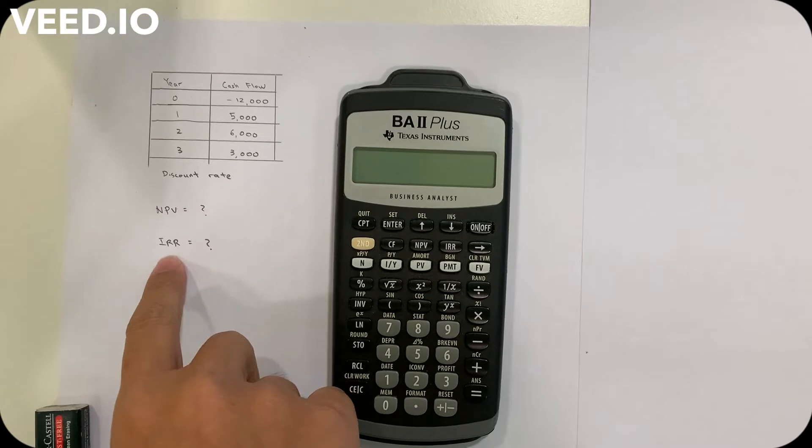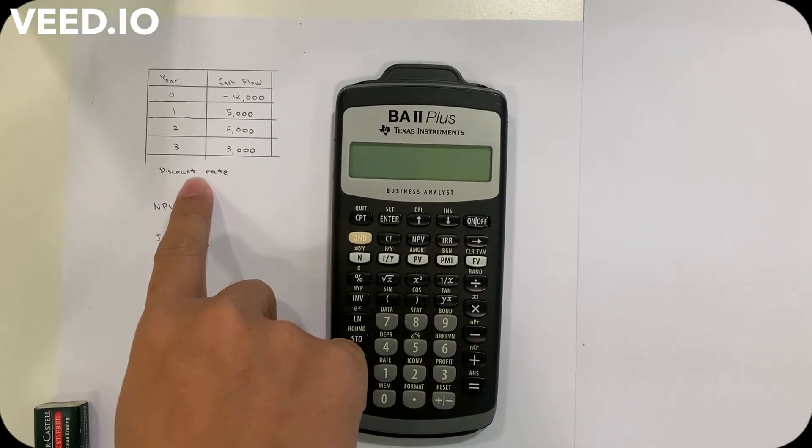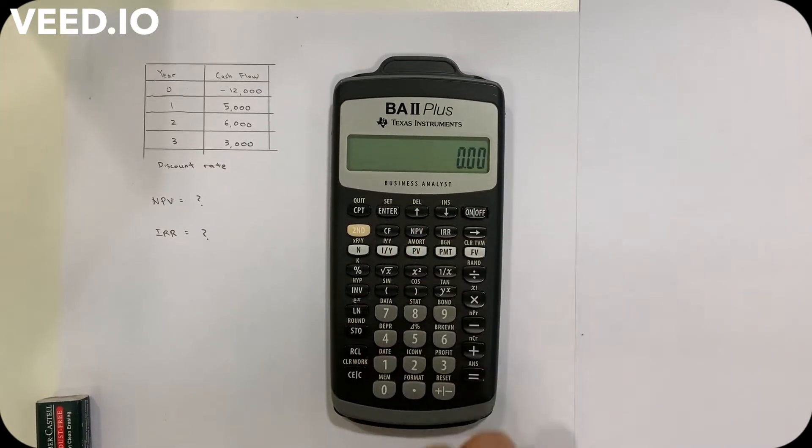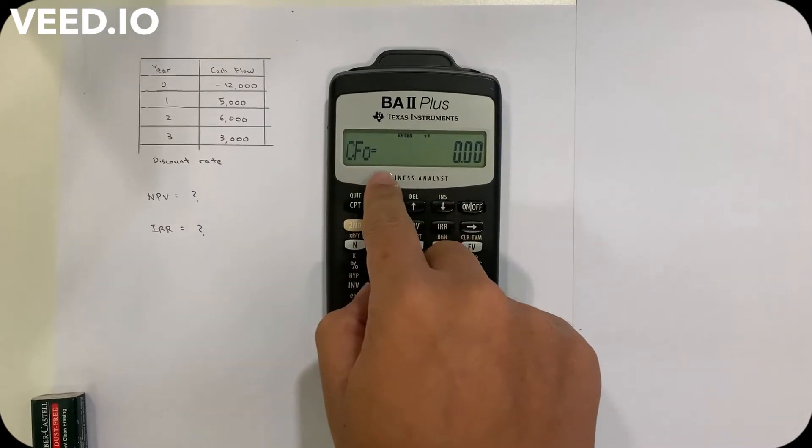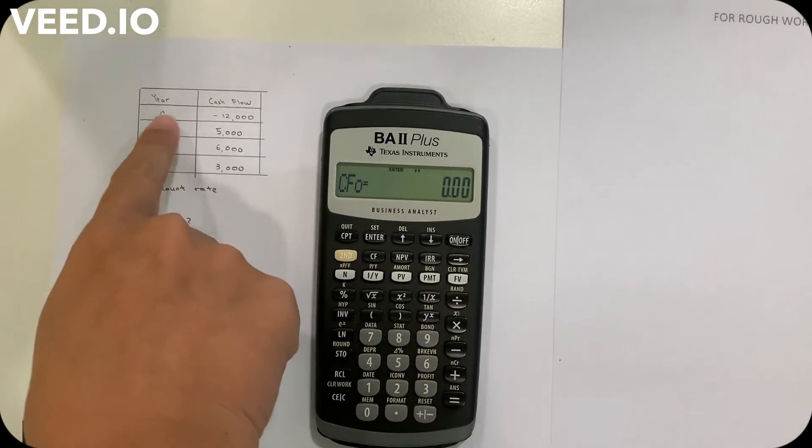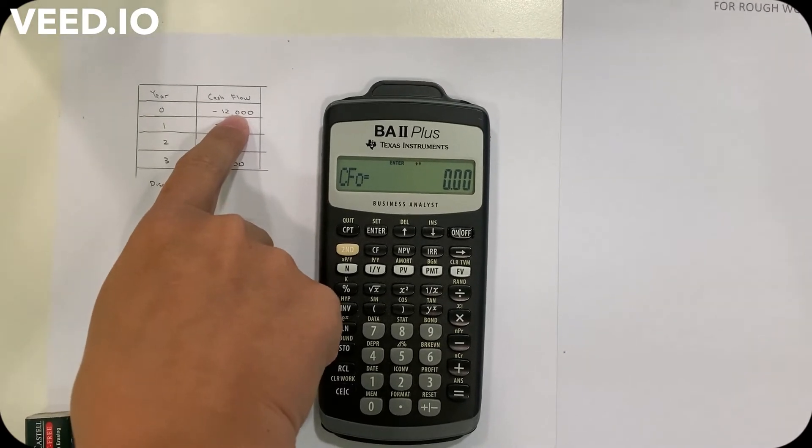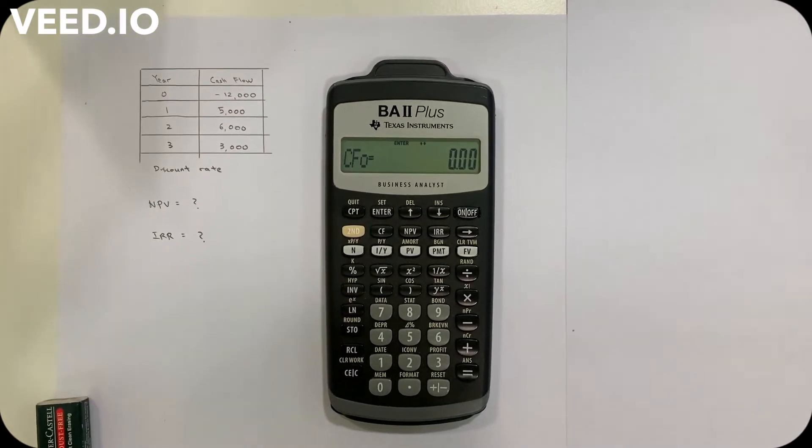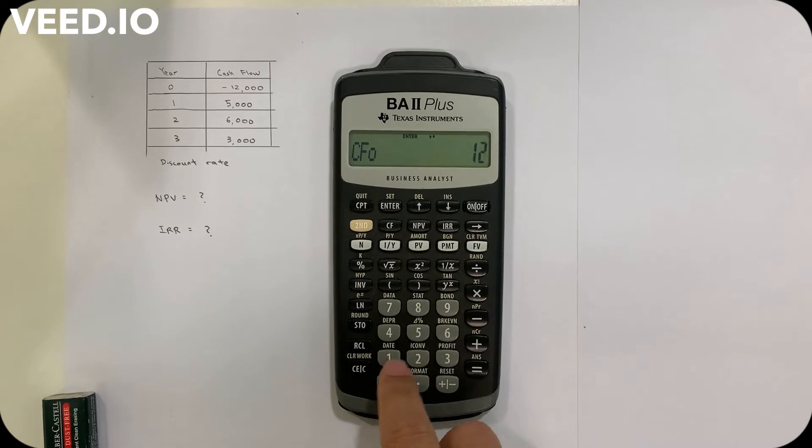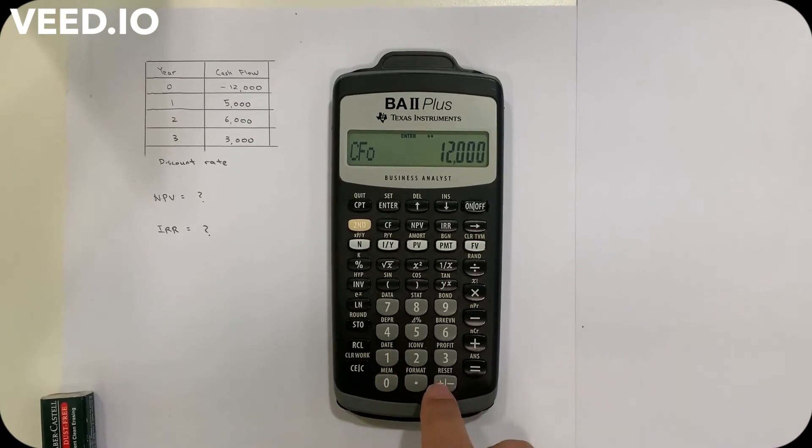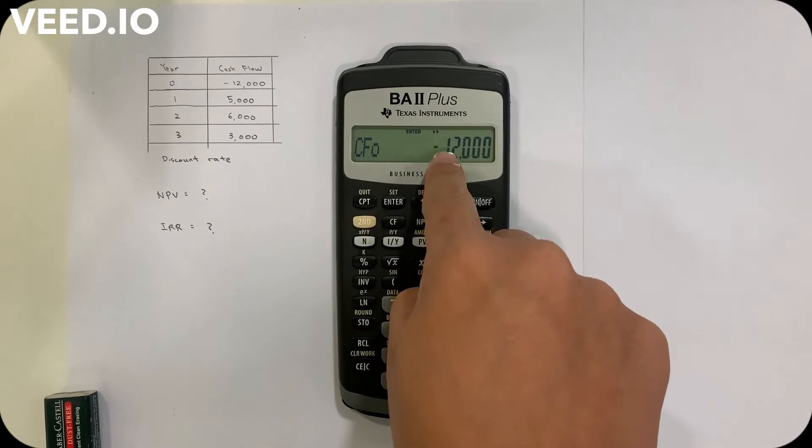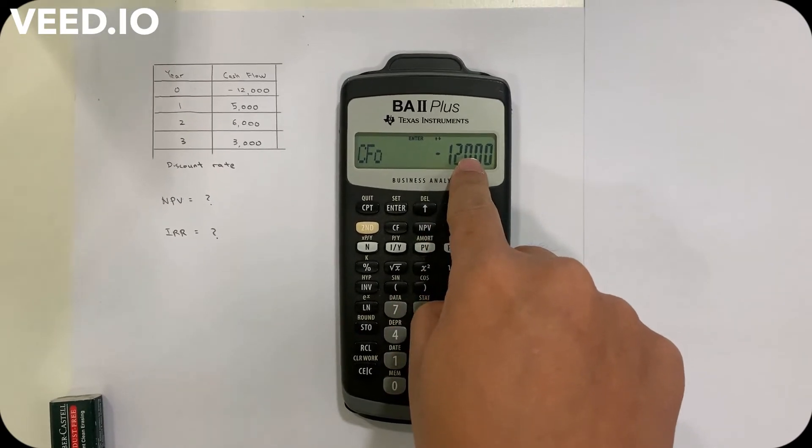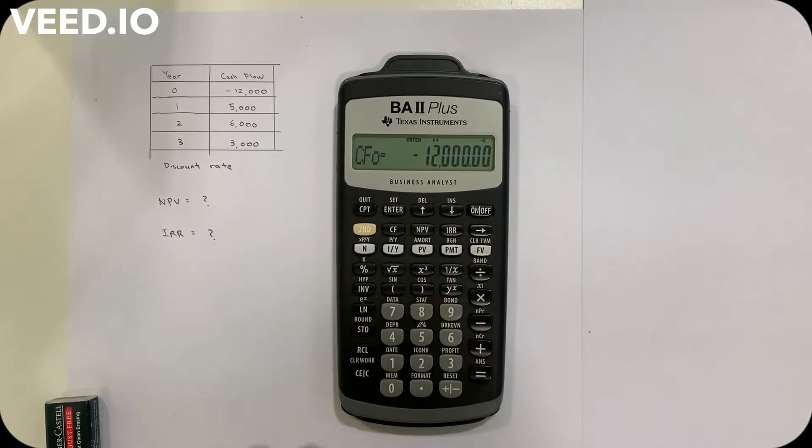I have to start with the CF button. This will show us CF zero, and this is where I have to key in the cash flow in year zero, the negative 12,000. I key 12,000 and press this button to make it negative, then press enter.